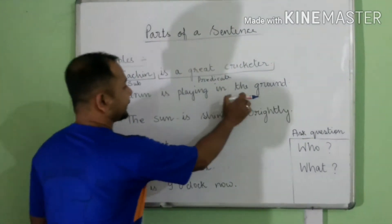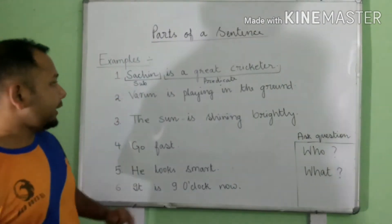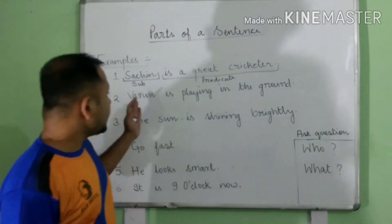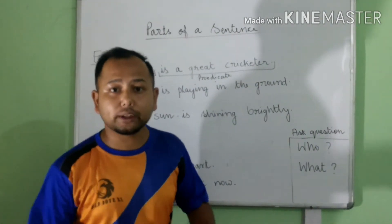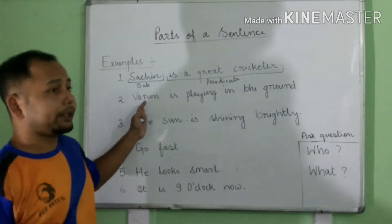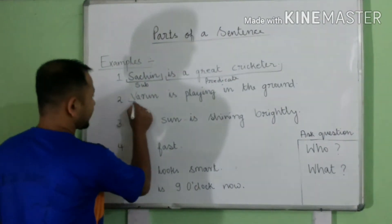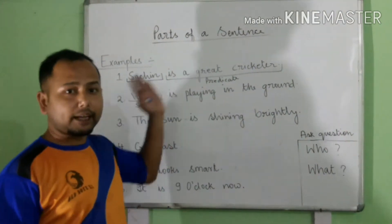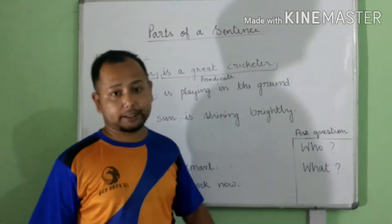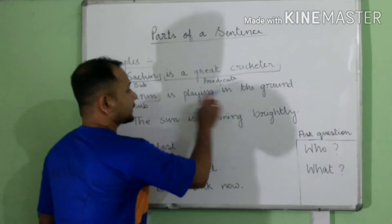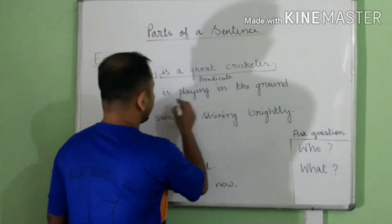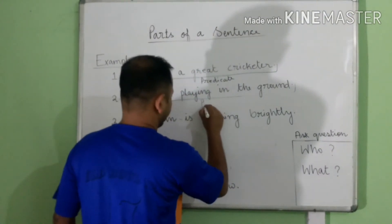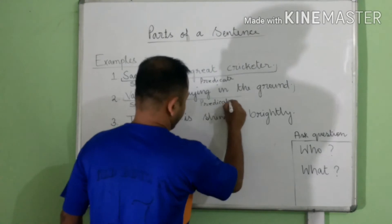Second example: Varun is playing in the ground. To identify the subject, we ask the question: who is playing in the ground? Varun is playing. So Varun is the subject. The rest — is playing in the ground — is the predicate.